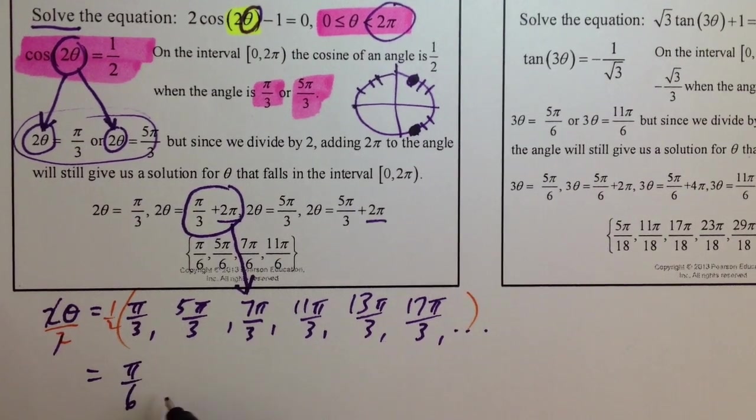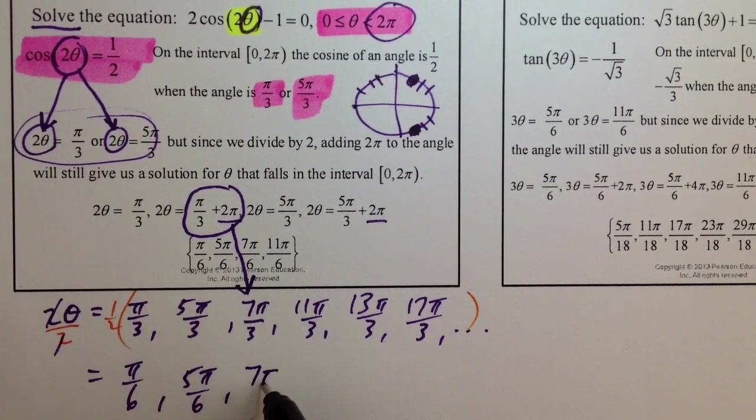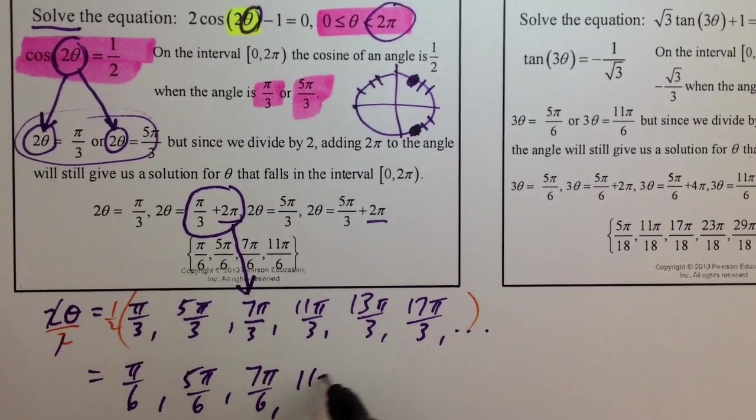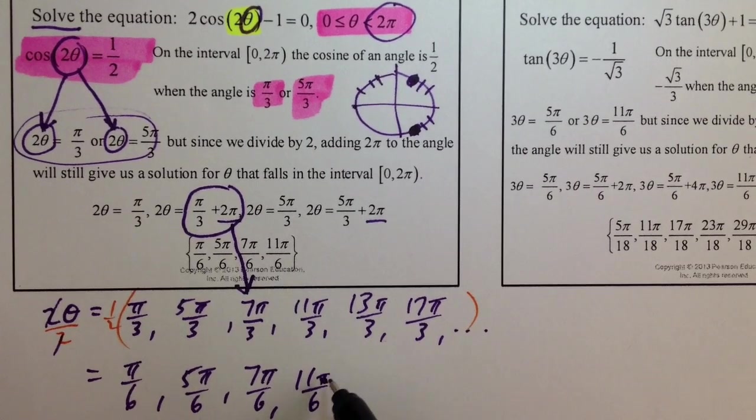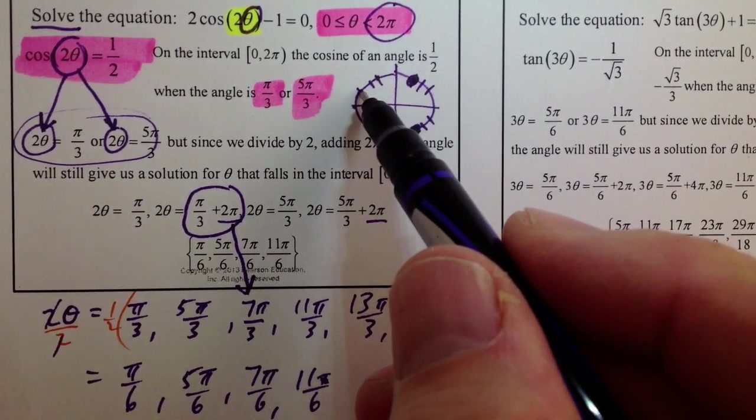Then we have 5 pi over 6, 7 pi over 6, 11 pi over 6. So, here we are just about around the unit circle, because we know where these angles are. 1 pi over 6, 5,